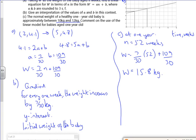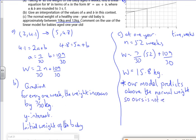So that's not good, is it? We've said 10 and 12, but actually we've got 15.8. So our model predicts above the recommended or the normal weight, the normal weight. So ours is not reliable. We've actually extrapolated and it's not worked there. We could write that.